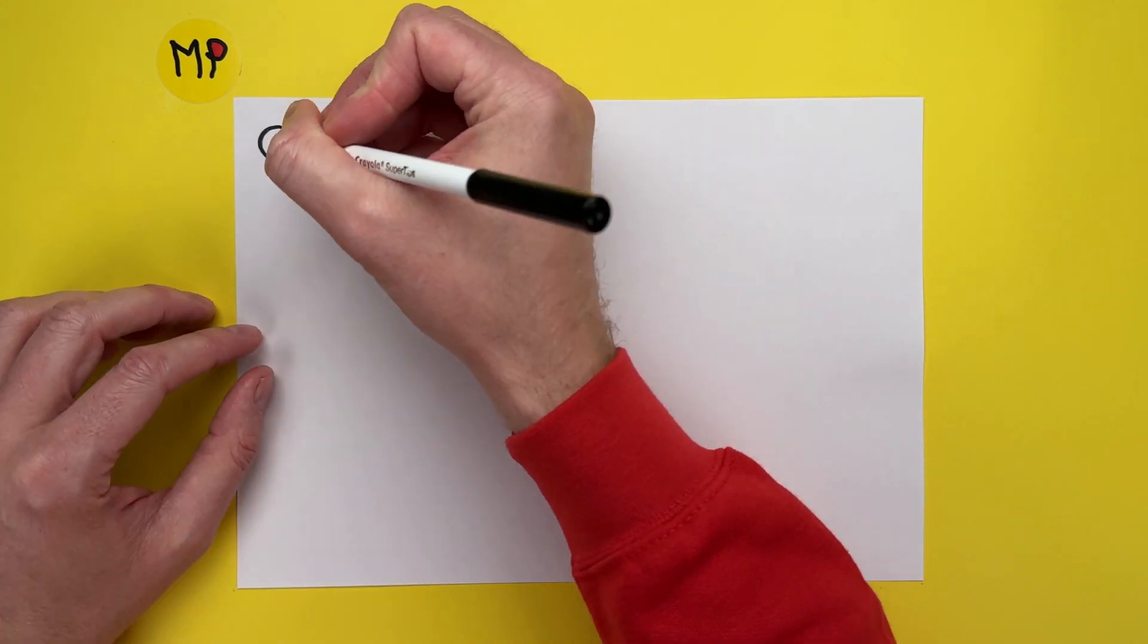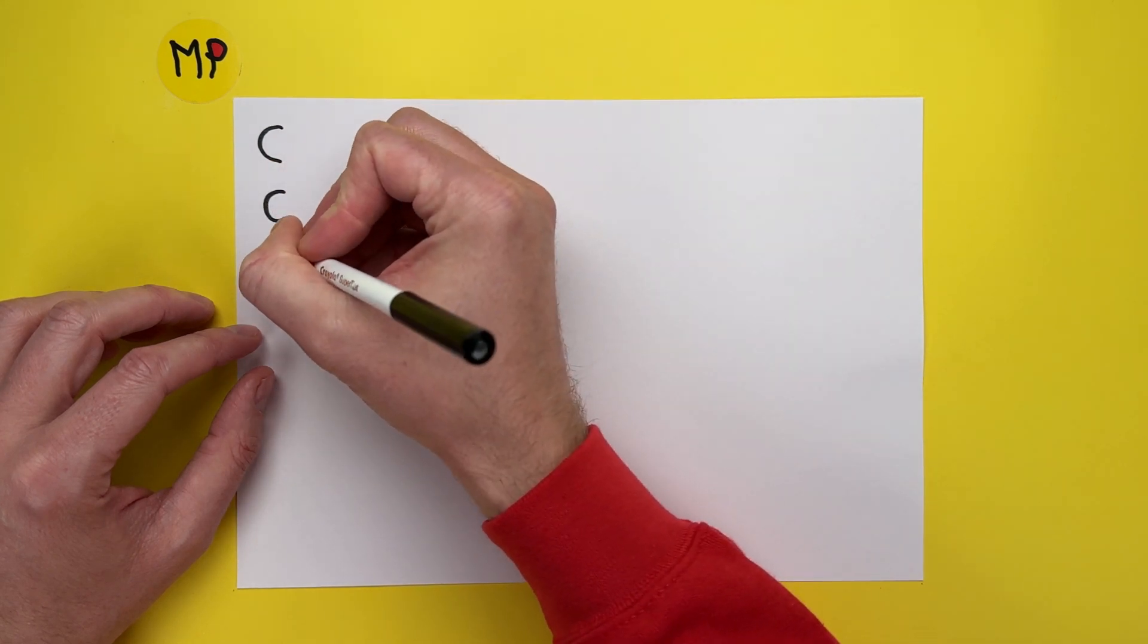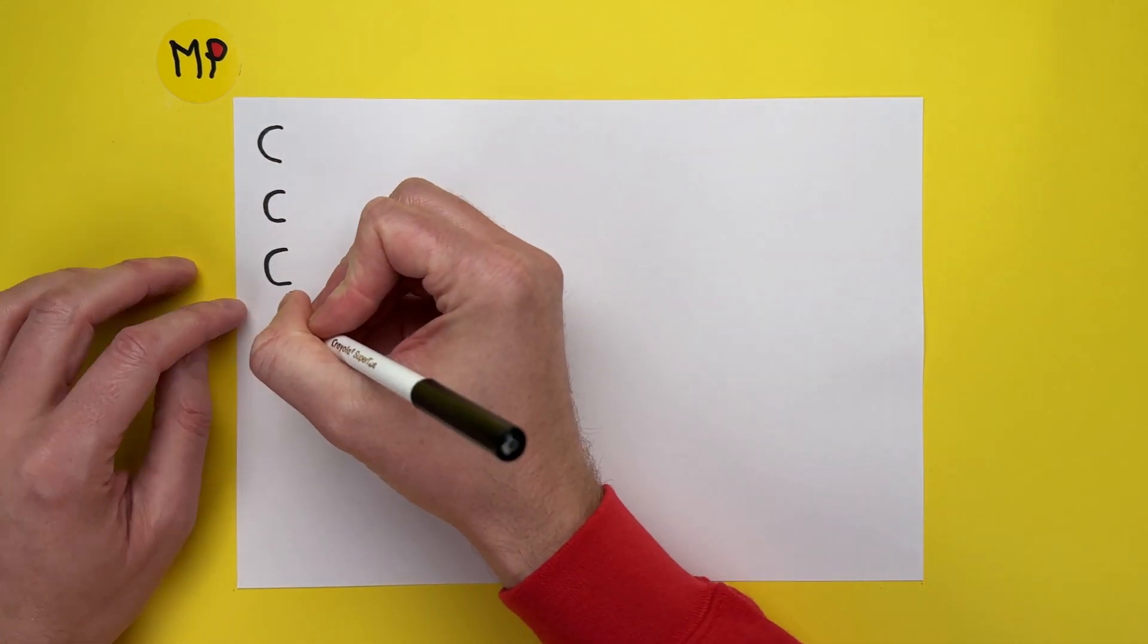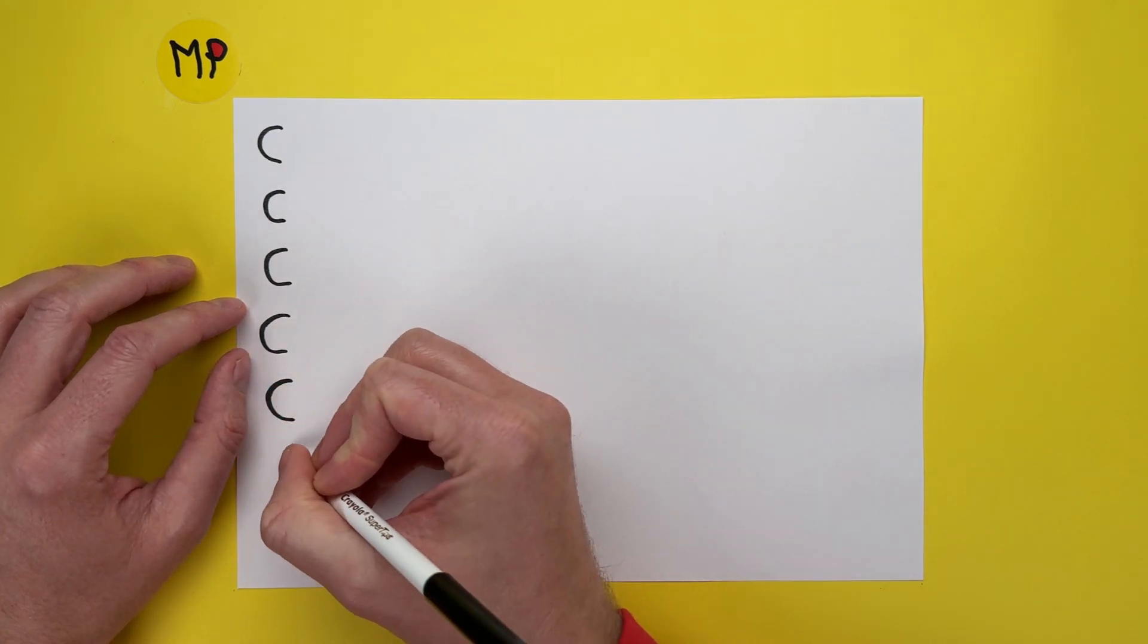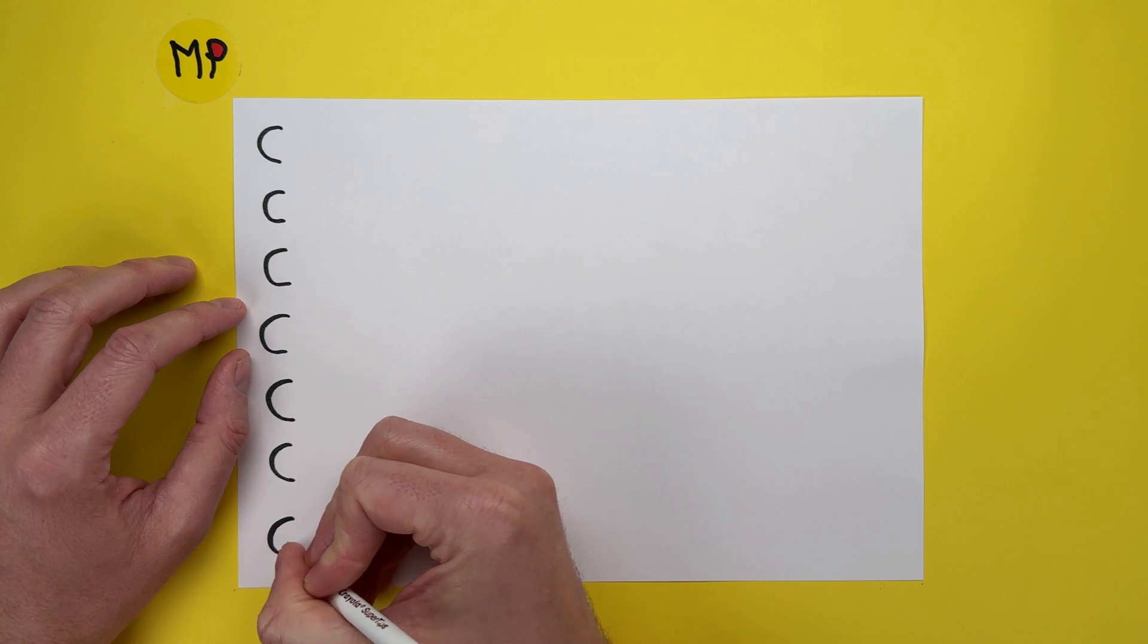We're just going to draw some C's. So very simple. They don't need to be exact. They can be different shapes, different sizes.